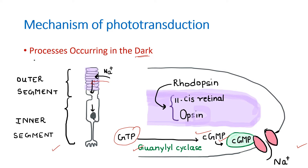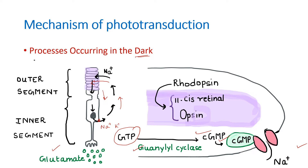This sodium diffuses into the inner segment and is pumped out by the sodium-potassium ATPase pump. There is a continuous circulation of sodium from the outer segment to the inner segment. Because of this continuous sodium inflow, the membrane potential decreases — the cell is depolarized. In the dark, there will always be depolarization and release of the neurotransmitter glutamate. So unlike typical neurons, it is in the dark that these photoreceptors are depolarized, and glutamate is continuously released.